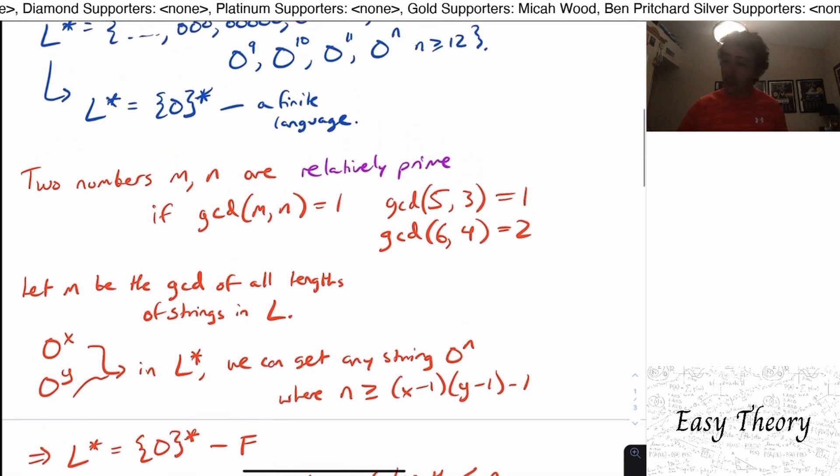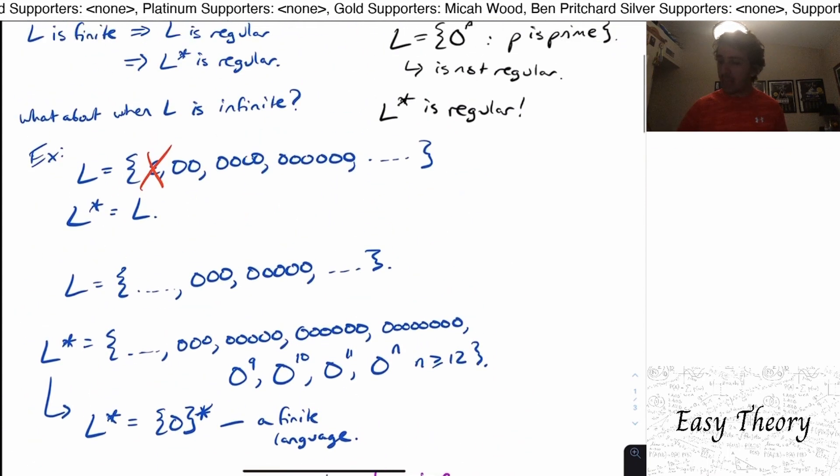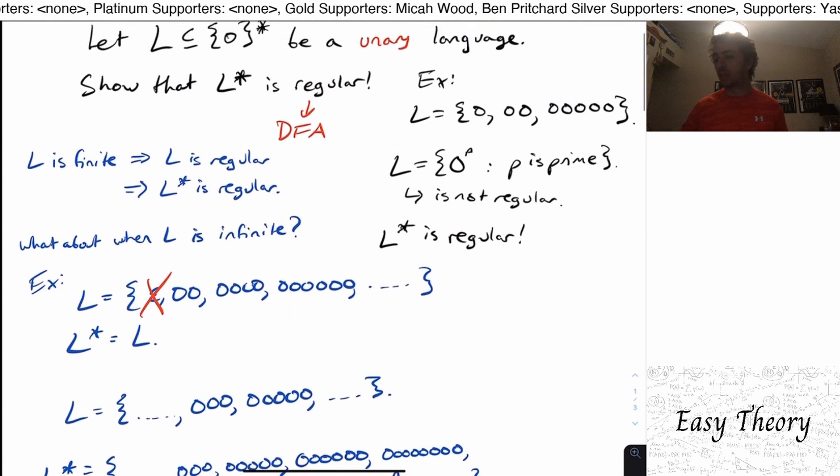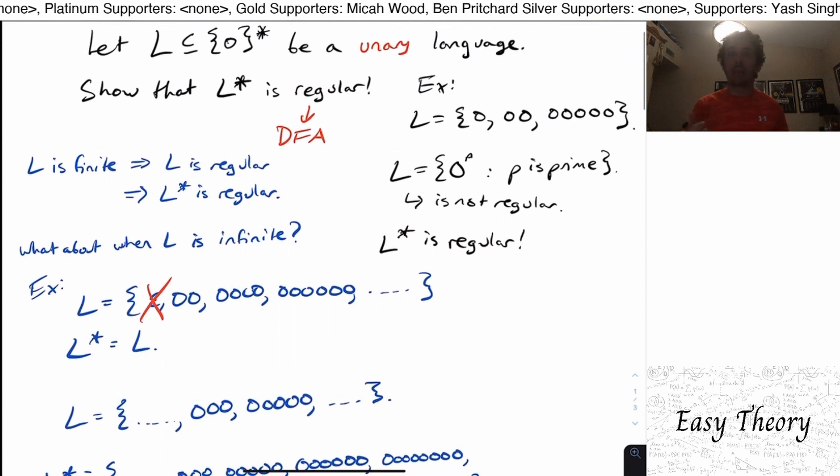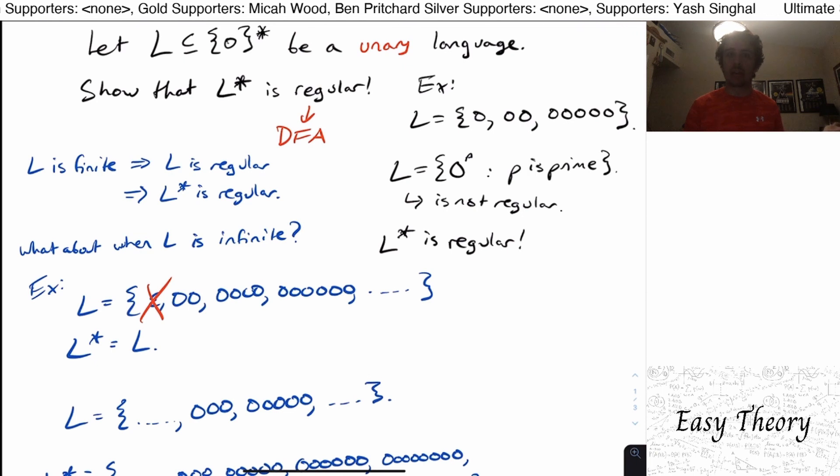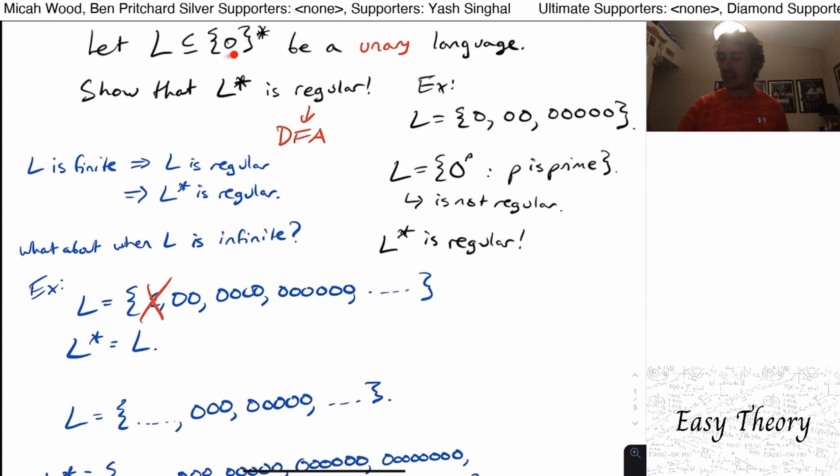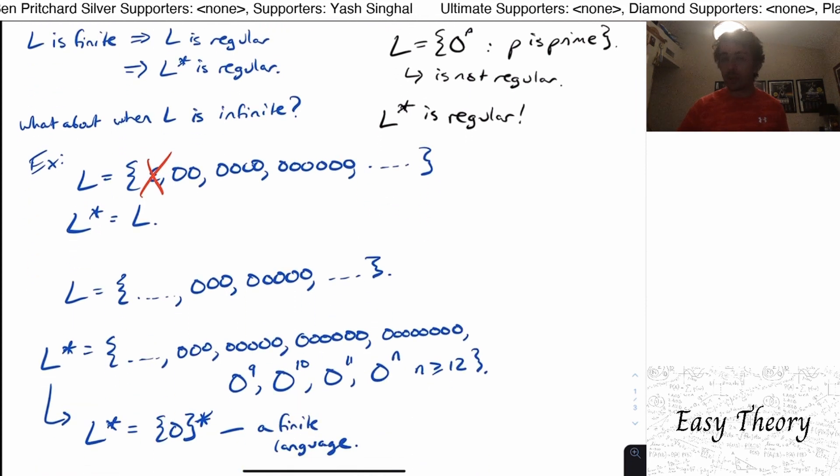So this is not an easy proof, but it's pretty amazing in what its implications are, in that the star operator really destroys whatever properties the original language had. So if the language was completely undecidable, the star of it is regular, and we really exploited the fact that the language is unary.